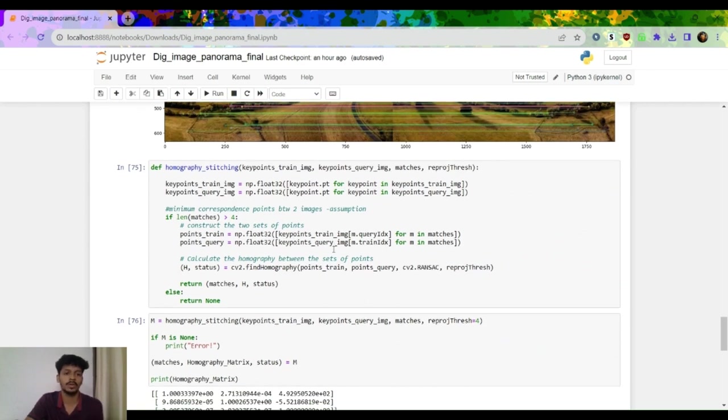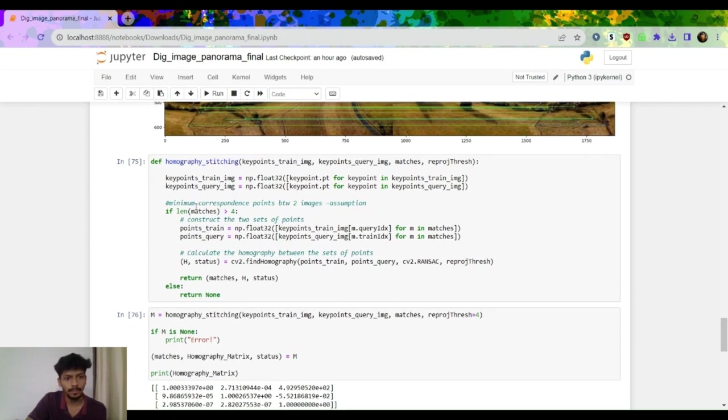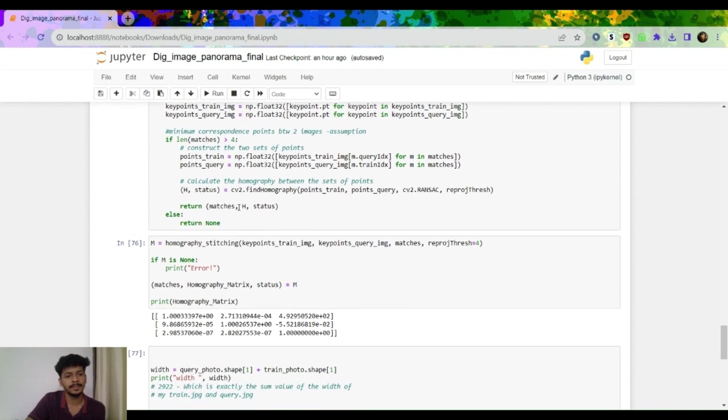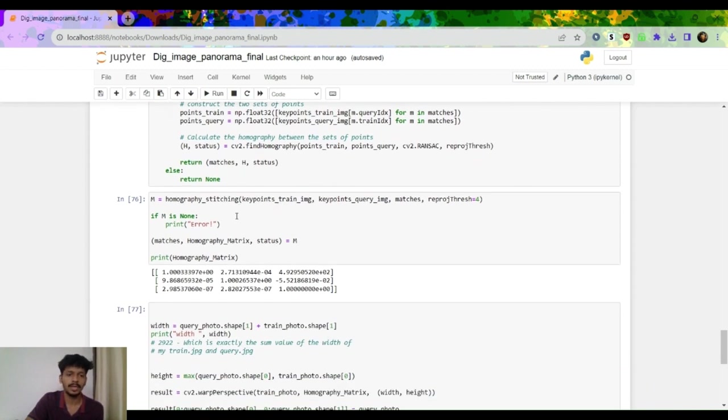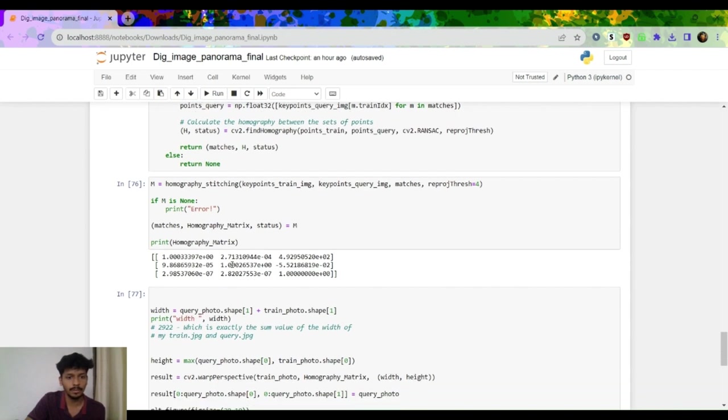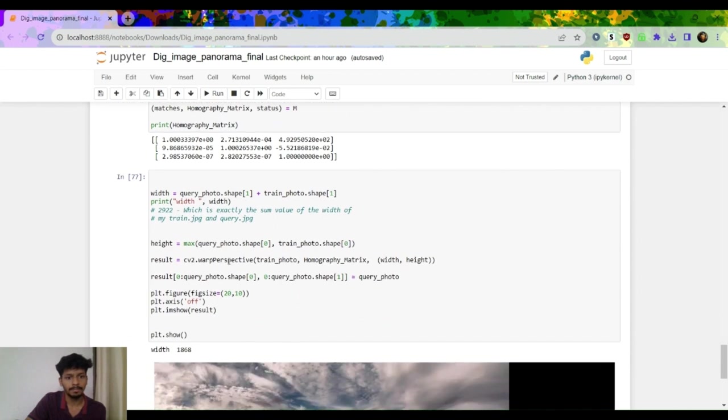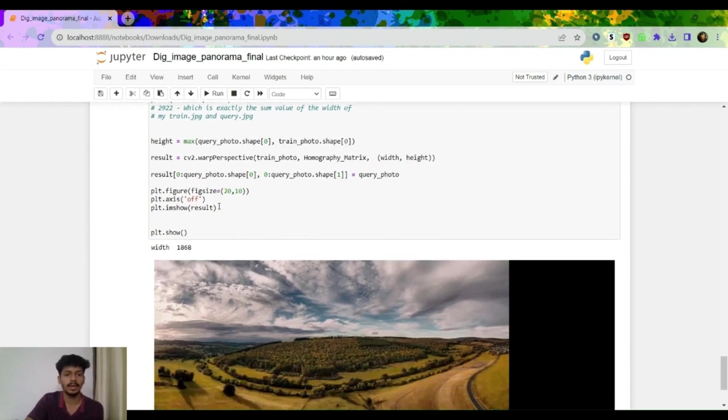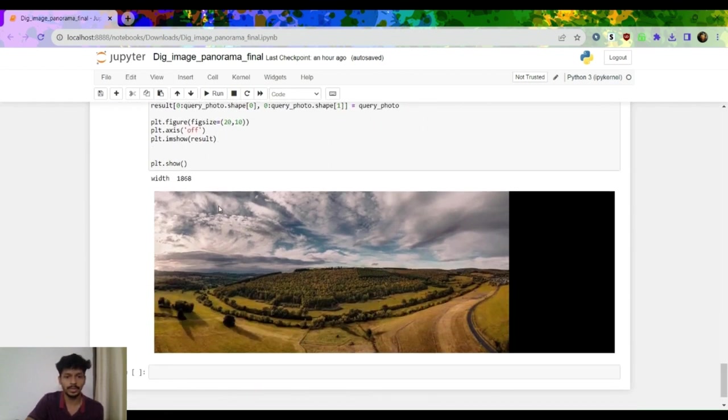Then comes the homography stitching. For the assumption, minimum corresponding points between two images, we are assuming it as four. Based on that we will get the results here. After that we will get the homography matrix. We can see eight degrees of freedom, the matrix we can see it here after stitching. Then warping will happen. We are taking the image width and height, we can just do basic math. It is taking the width of both input images and then calculating it, and then wrapping purposefully. This is the final output.